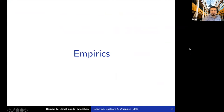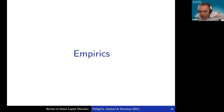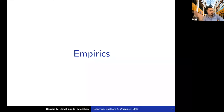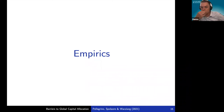There is a question from Chen Yu about distributional assumptions and order of magnitude of the frictions. The idiosyncratic ones are extreme value type 1 distributed — a pretty standard assumption. The other ones we're going to measure directly, so we don't impose a particular distribution on them.